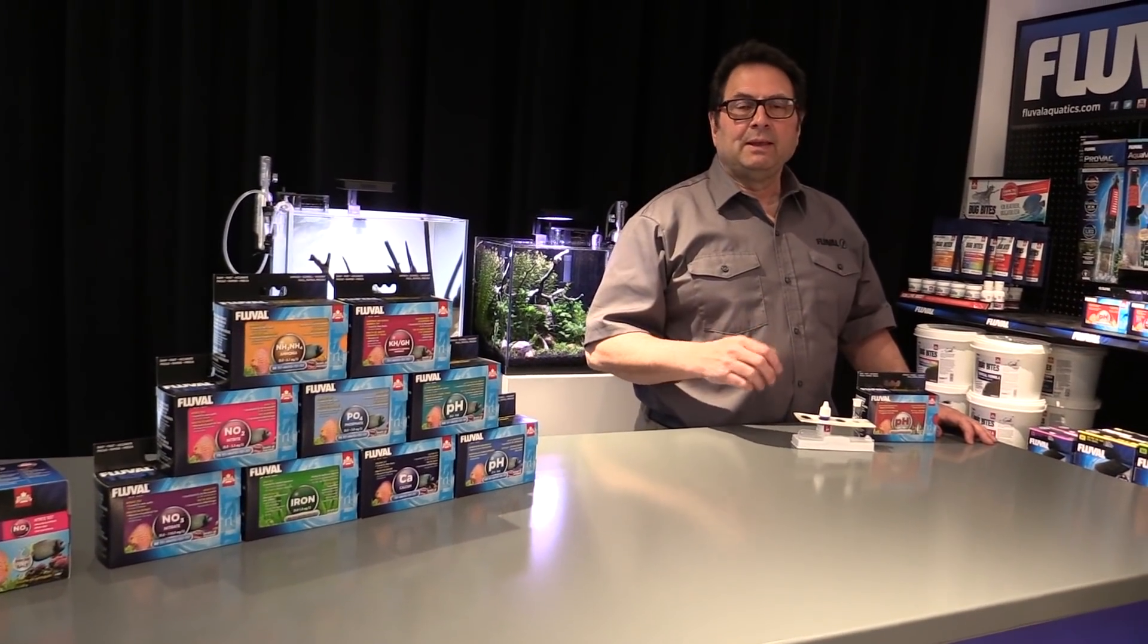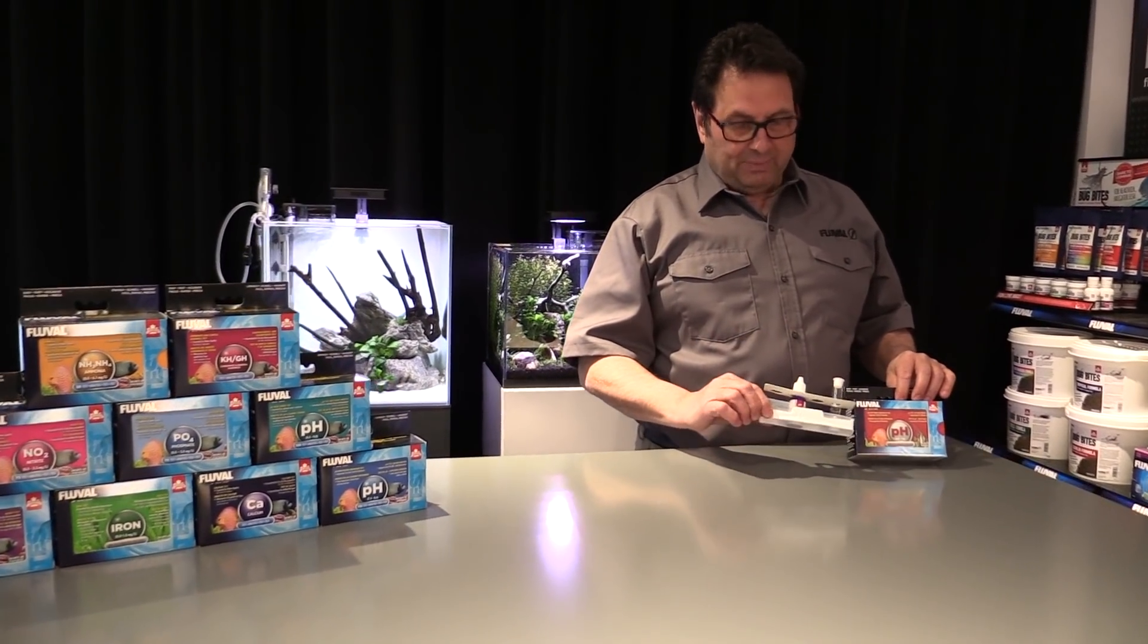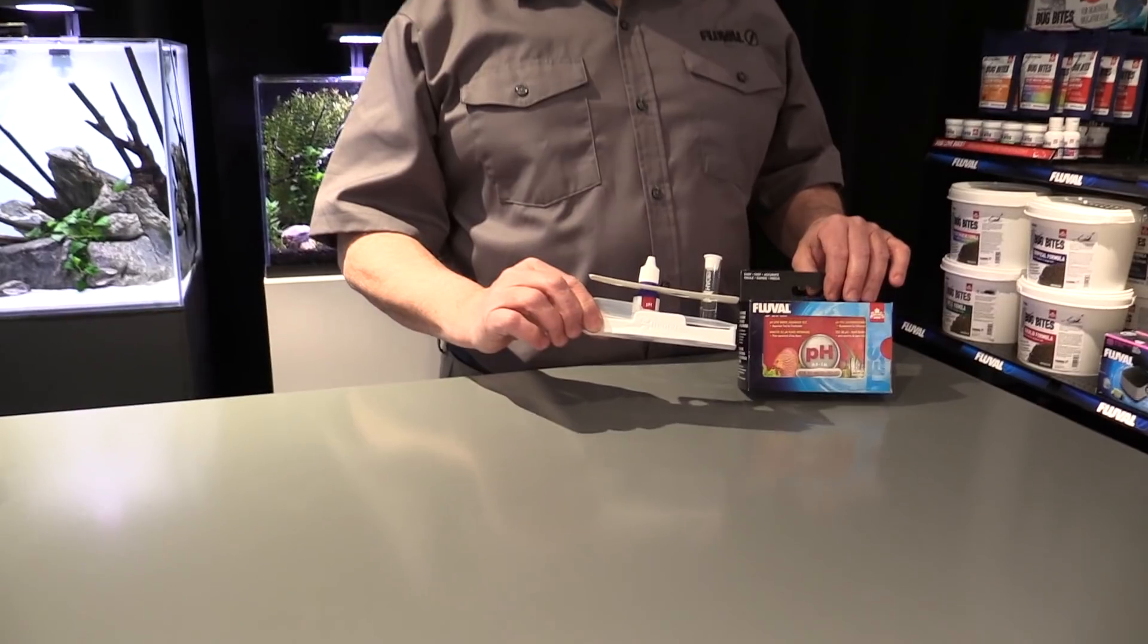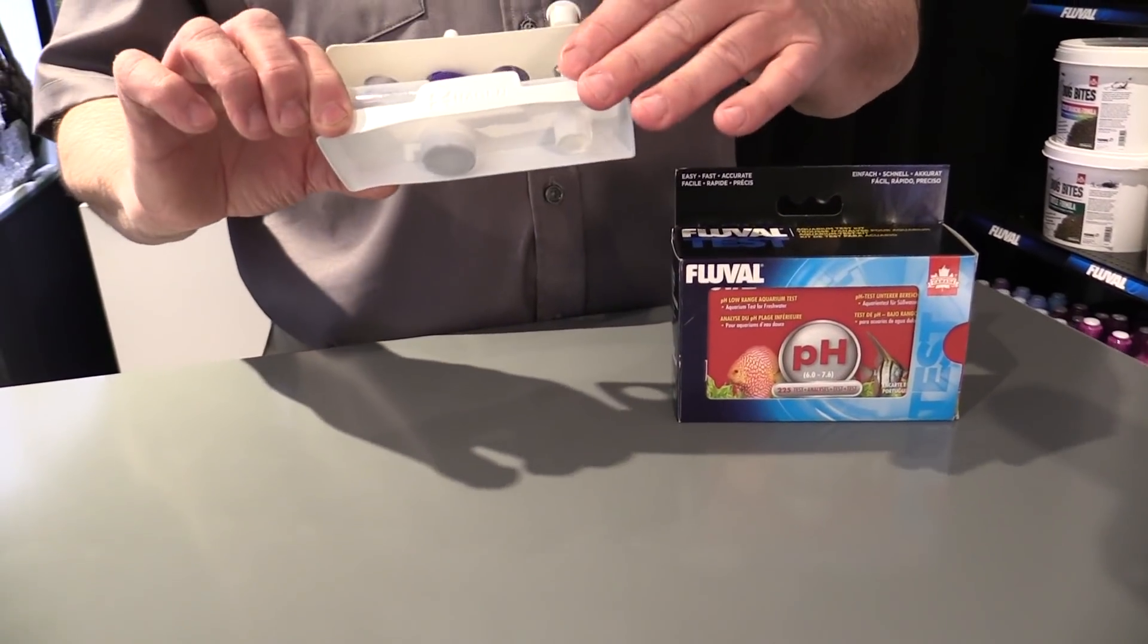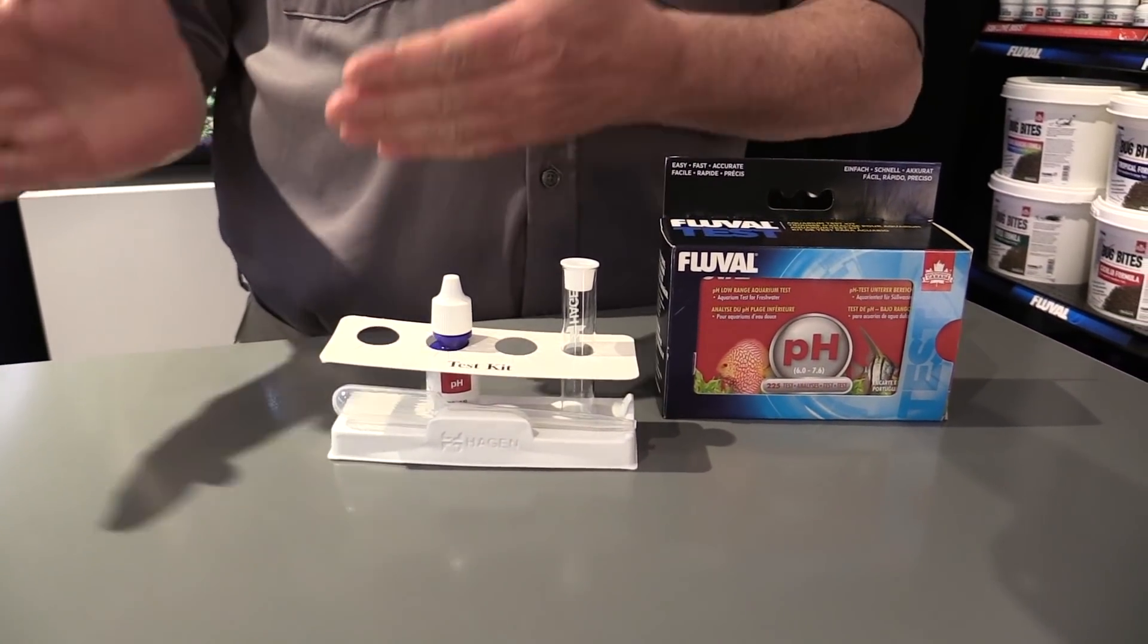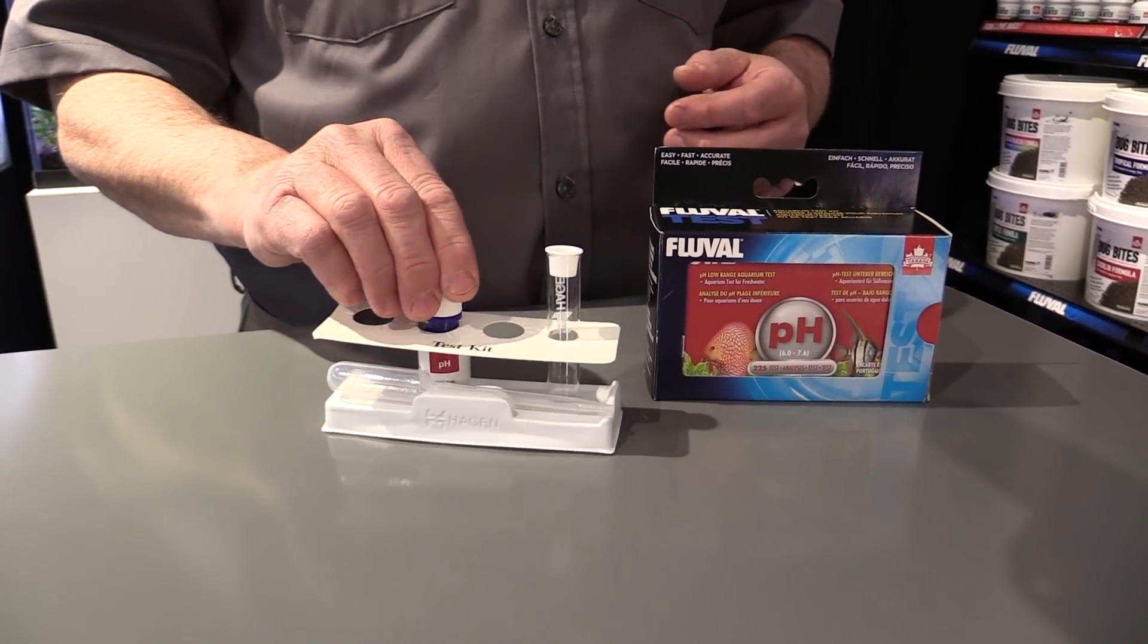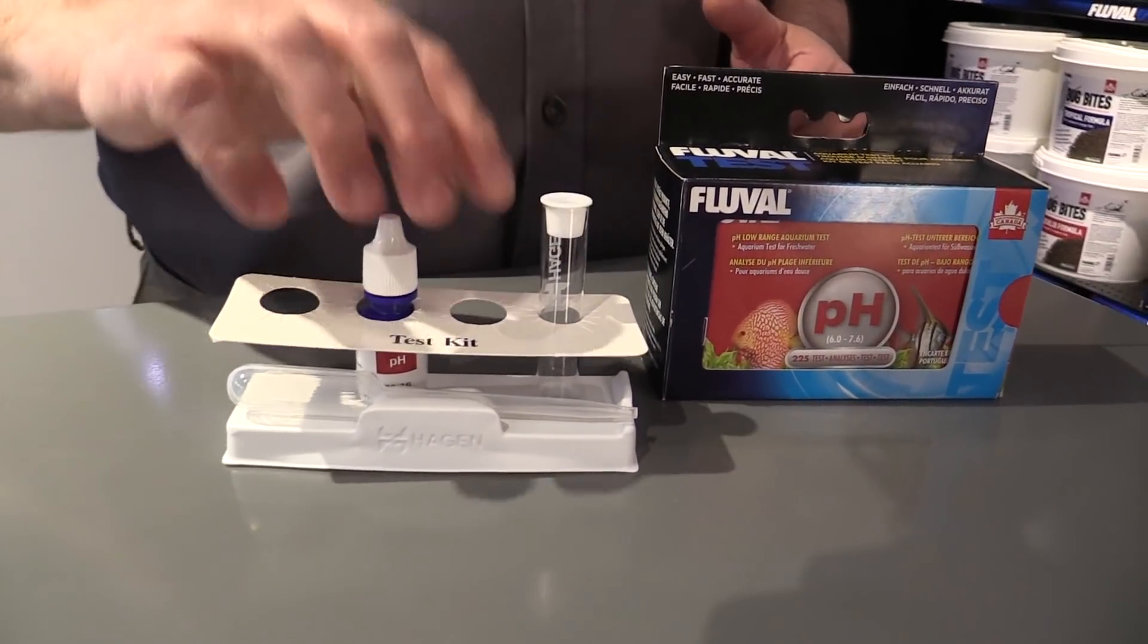Now we have unboxed already a low-range pH test kit over here. We'll go through the contents. You can see all of our test kits come with a lab base. In this case there's one reagent, and some of the other tests, for example some of the ones we have over on the side, have multiple reagents.